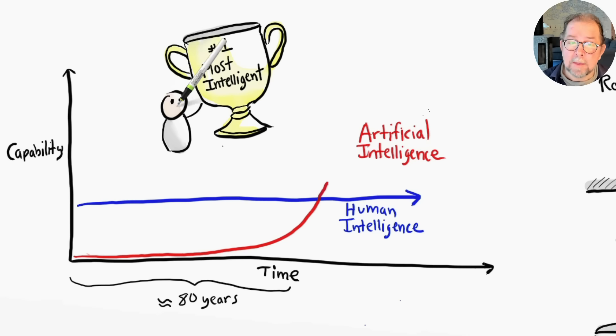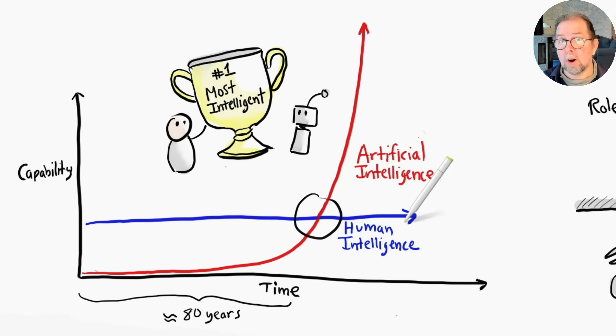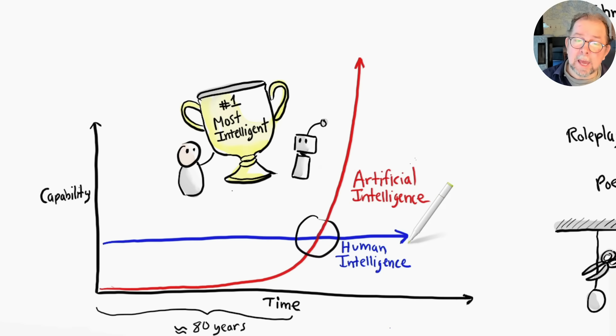So we are right here at the crossing point where AI is better at some things and humans are better at some things, but AI's capabilities are improving at an exponential rate while ours aren't. We don't know how long that exponential improvement will continue or if it will level off at some point, but we're definitely entering a new world order.